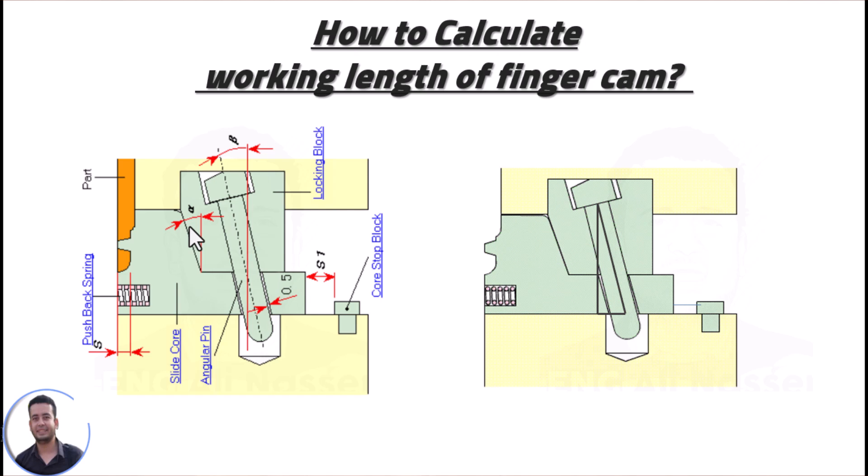The stroke length or stroke travel is about five to ten millimeters plus the thickness of undercut. So to calculate working length, we need to define stroke length, angle of angular pin, and the clearance in bin, which is around 0.5 to 0.75. Let's get an example to solve.